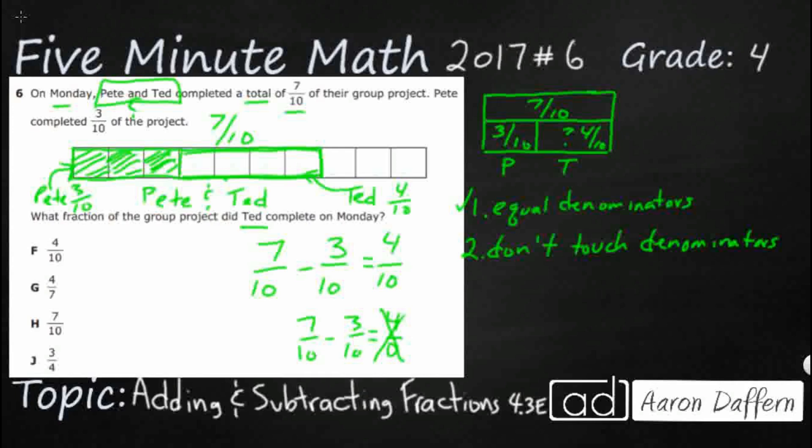So adding and subtracting fractions is a little bit tricky. You need to have equal denominators. And then whenever you add or subtract, you don't touch the denominators. You only touch the numerators. And our answer here is going to be F.